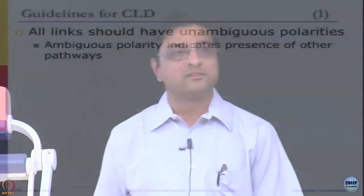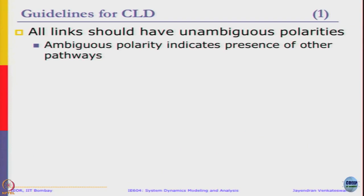Let us look at some guidelines for CLDs. First, all links should have unambiguous polarities — ambiguous polarities can indicate the presence of other pathways. You can have only plus or minus; you cannot write 'it depends.' If it depends, then you have to uncover what it depends on — elaborate the statement, do not just stop there. That is what we mean by alternate pathways. There is something else that is affecting the outcome. List all those things; the model will look bigger, which is fine. Just go ahead and list whatever alternate pathways are there.